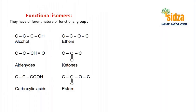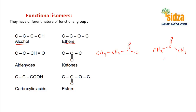Functional isomerism is possible between alcohols and ethers, and also between aldehydes and ketones. For example, CH3CH2CHO is an aldehyde with three carbons — formula C3H6O — and CH3COCH3 is acetone, a ketone, with the same formula C3H6O. The functional group is different: one is an aldehyde and the other is a ketone.